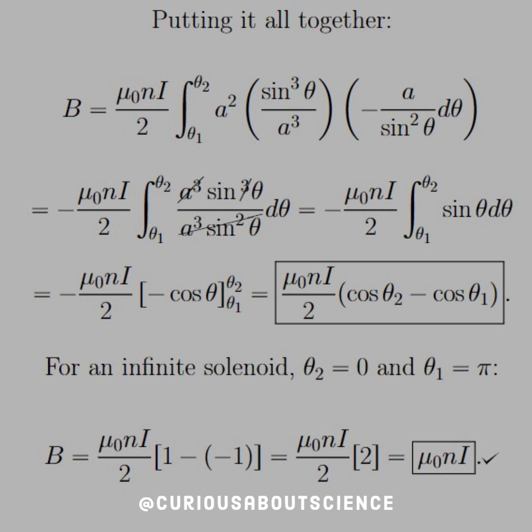Pretty similar to some other results we found. But in the case of the infinite solenoid, theta 2 would equal 0, and theta 1 would equal pi. Plug them in, and we get that B equals mu not n I. Really simple, really compact.